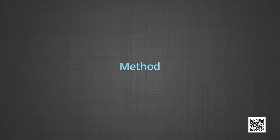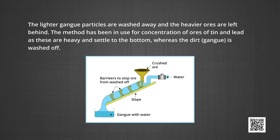The principle of hydraulic washing is the difference in gravities of the ore and the gangue particles; it is therefore a type of gravity separation method. In this process, an upward stream of running water is used to wash the powdered ore. The lighter gangue particles are washed away and the heavier ore particles are left behind. The method has been in use for concentration of ores of tin and lead, as these are heavy and settle to the bottom while the gangue is washed off.